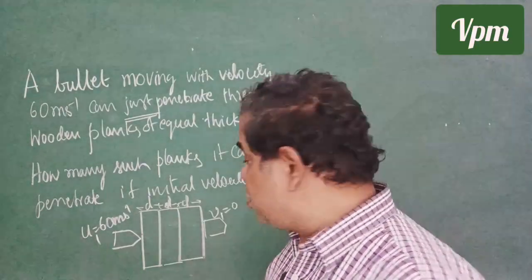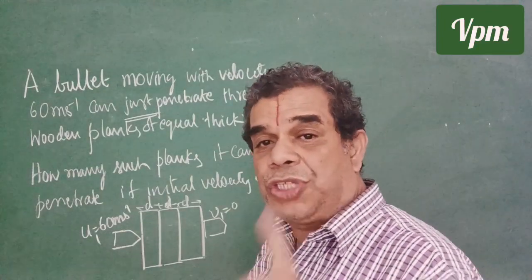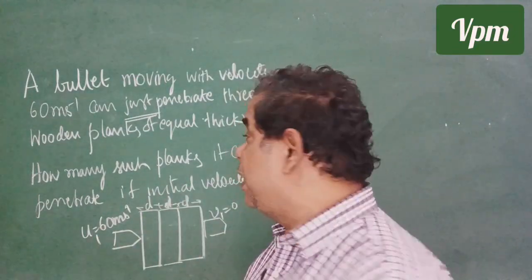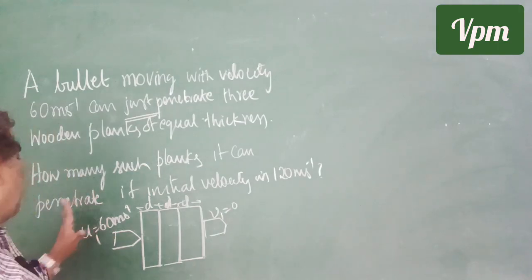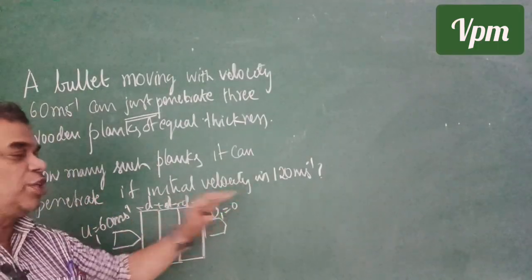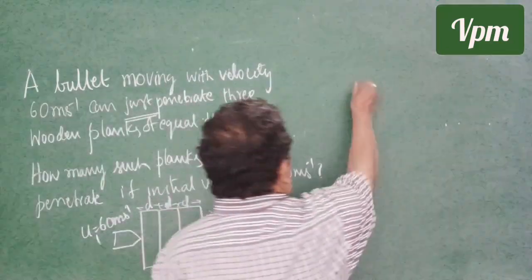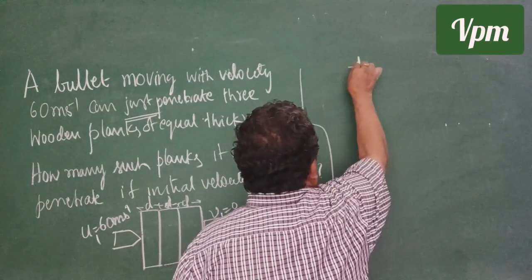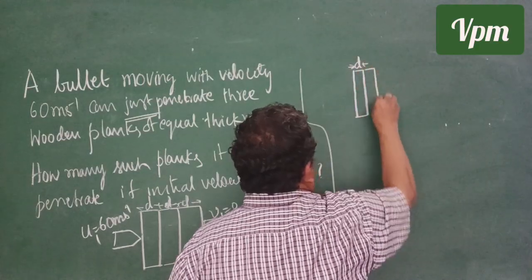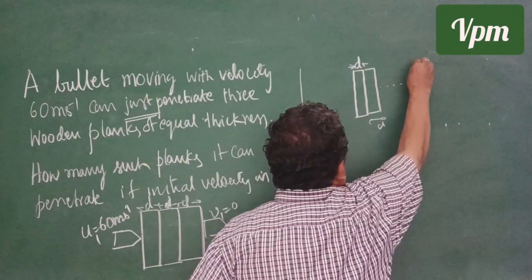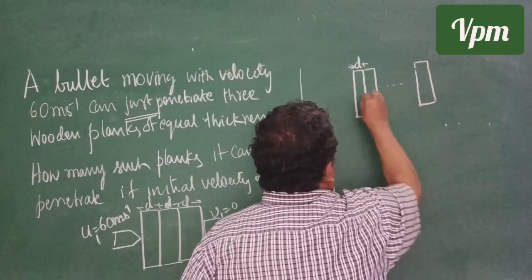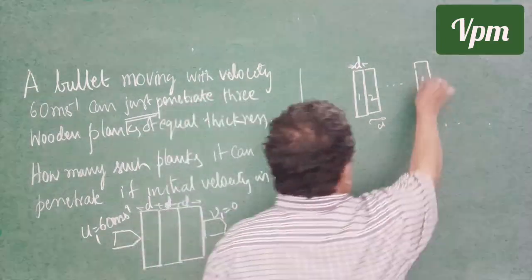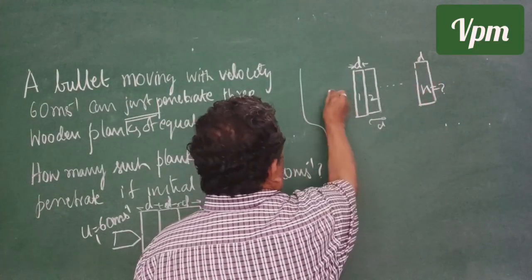Just remember: 'just' indicates final velocity zero — it comes out, that's all, it will not move further. For the second part: how many planks can it penetrate if the initial velocity is 120 meters per second? We draw a picture — I take one plank of thickness d, another of thickness d, and imagine there are n planks total.